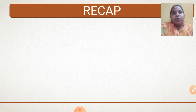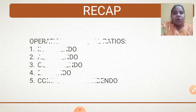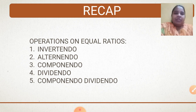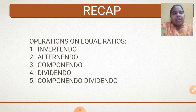Do you remember those properties? Which were those 5 properties I told you? They were: Alternando, Invertendo, Componendo, Dividendo, and Componendo-Dividendo. I know these are new terms, but I explained these properties in the previous slide.